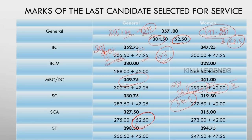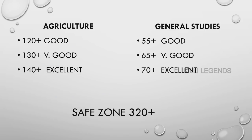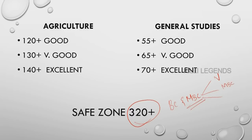This is the mark — this is the prelims plus interview combined. If the prelims is in the save zone, we can say 320 plus for BC and MBC. In MBC there are three categories: MBC one year, MBC General, and De-Notified Committee. In this category, MBC Category 3 — the cut-off is very different.